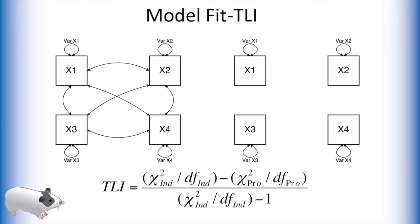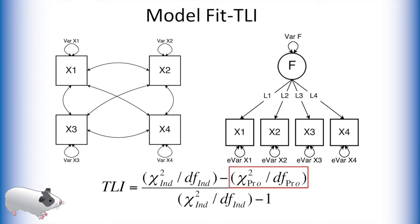TLI is another fit index that is calculated very similar to CFI. Here instead of subtracting degrees of freedom from the chi-square test between the saturated and independence model, we divide. We do the same with the chi-square test between our proposed factor model and the saturated model. Notice that if this ratio is one, then the TLI is also one, because the denominator has a negative one here.